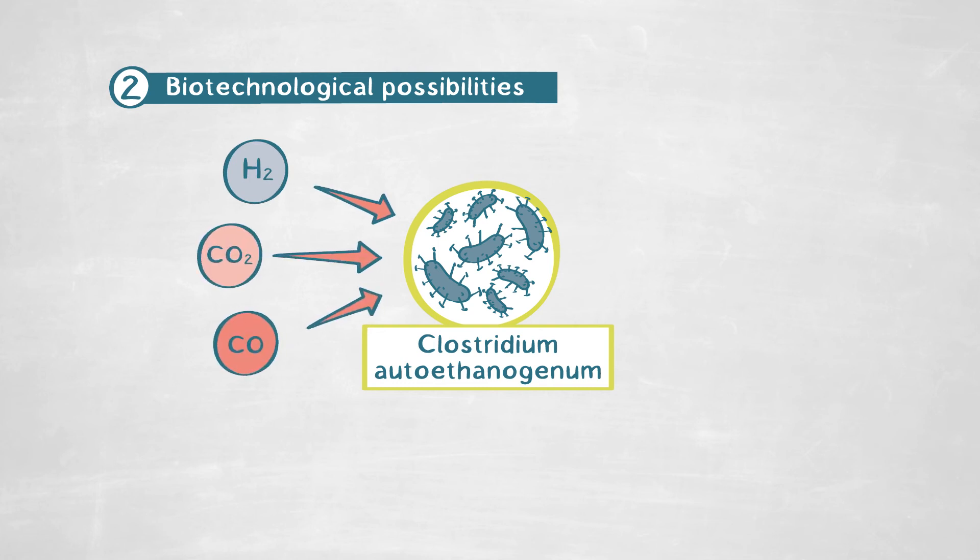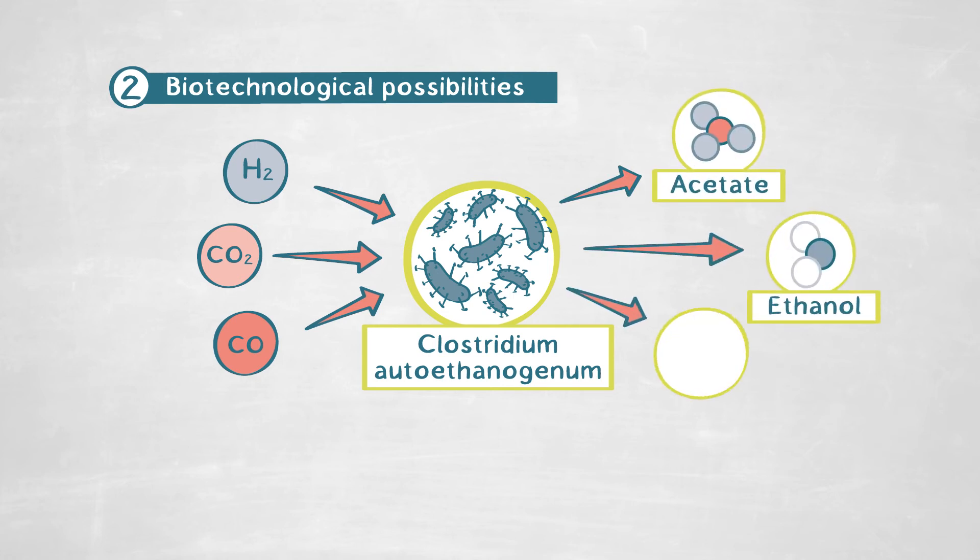And they are producing acetate, but also ethanol and butanol. That's a kind of specific feature of this kind of acetogenic bacteria, which by the way, gave its name to this strain, autoethanogenum, which means producing its own ethanol, which is really interesting.